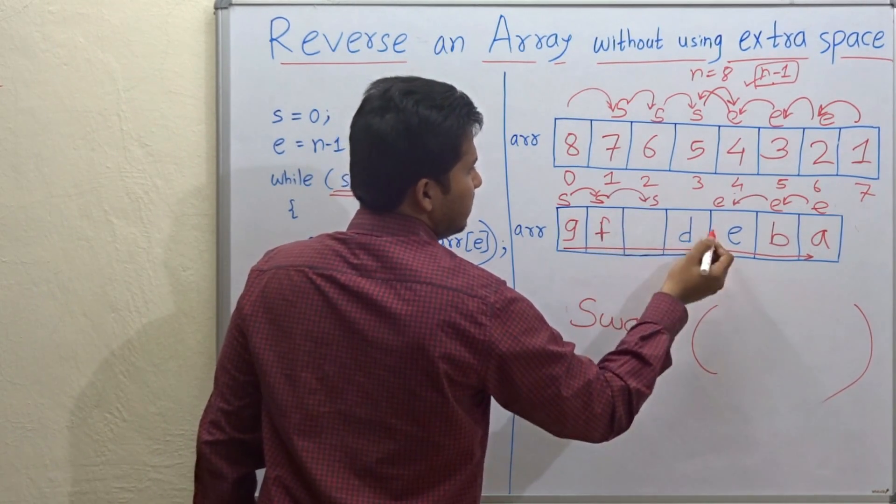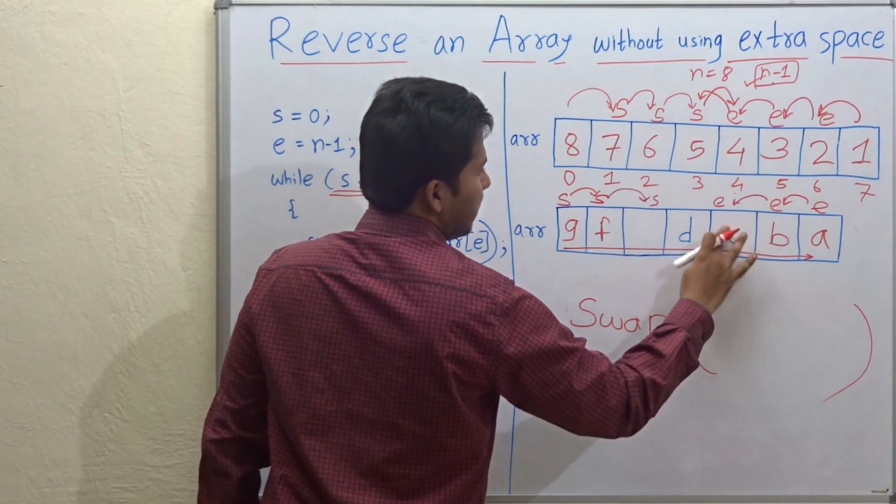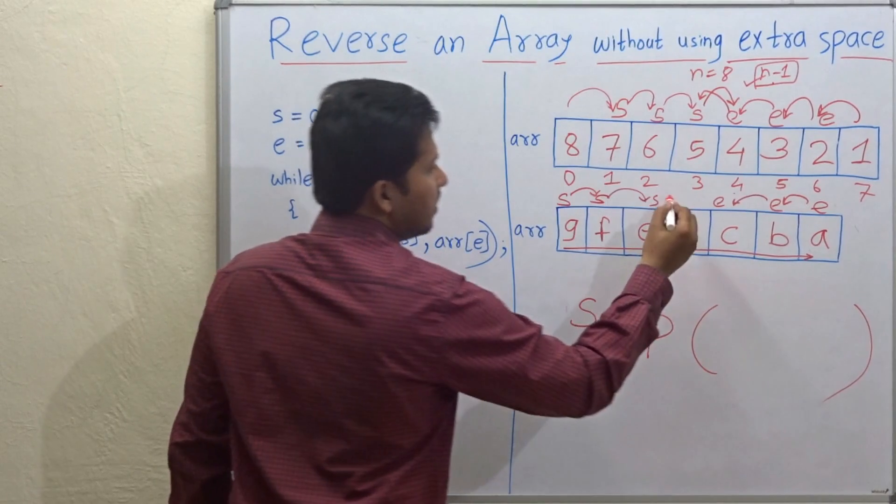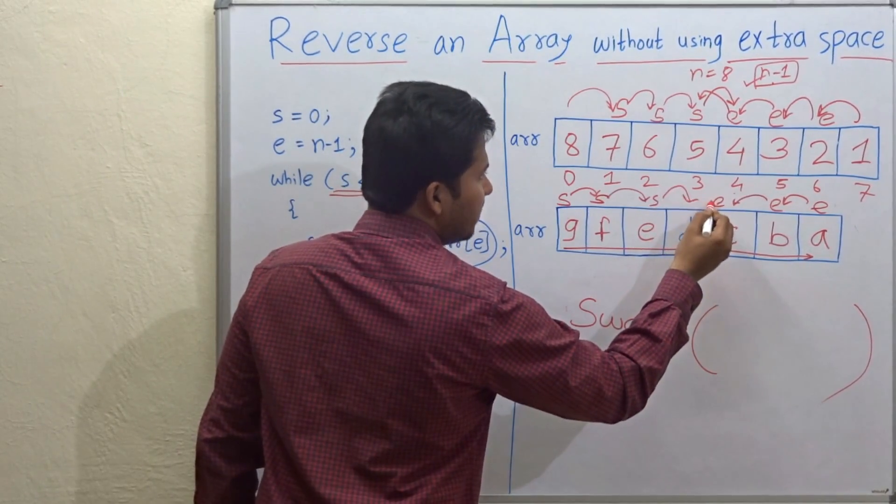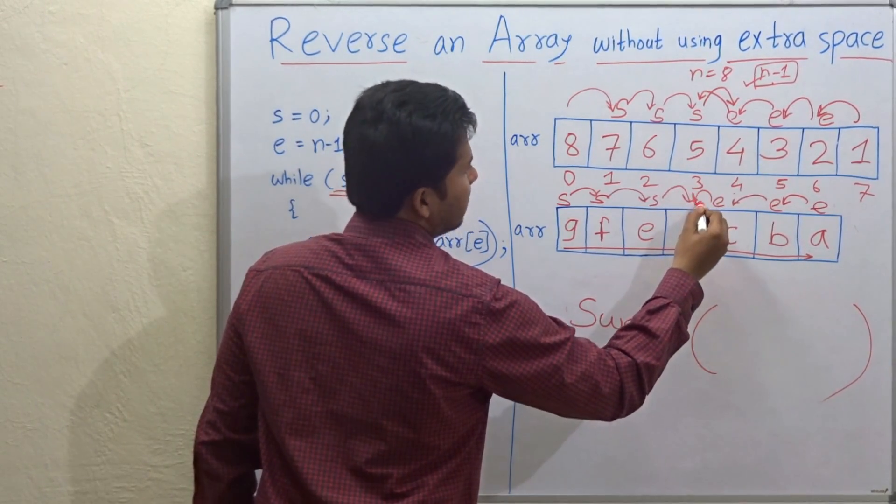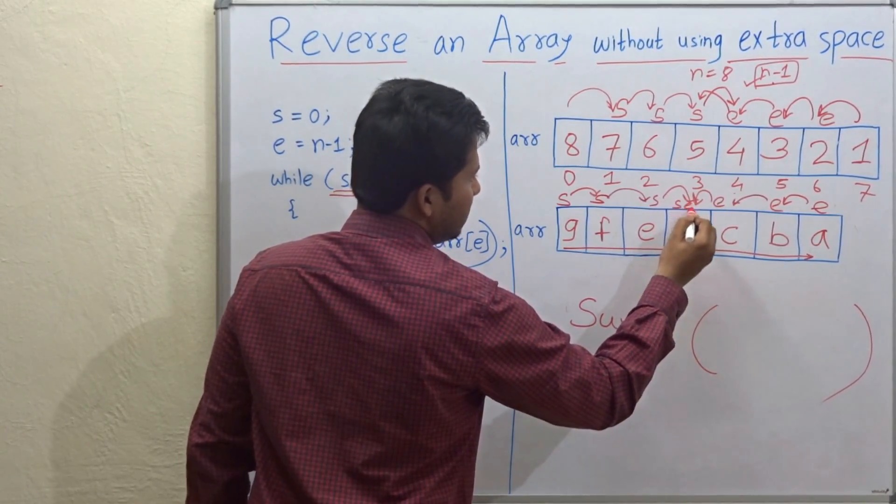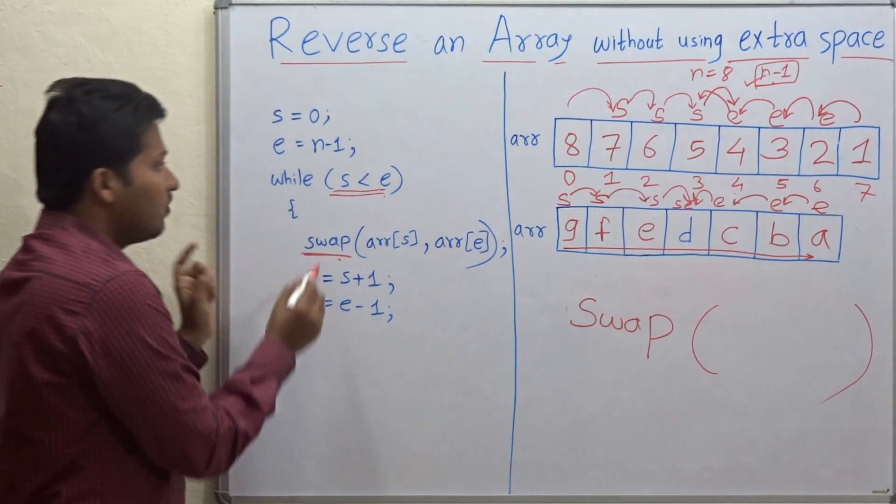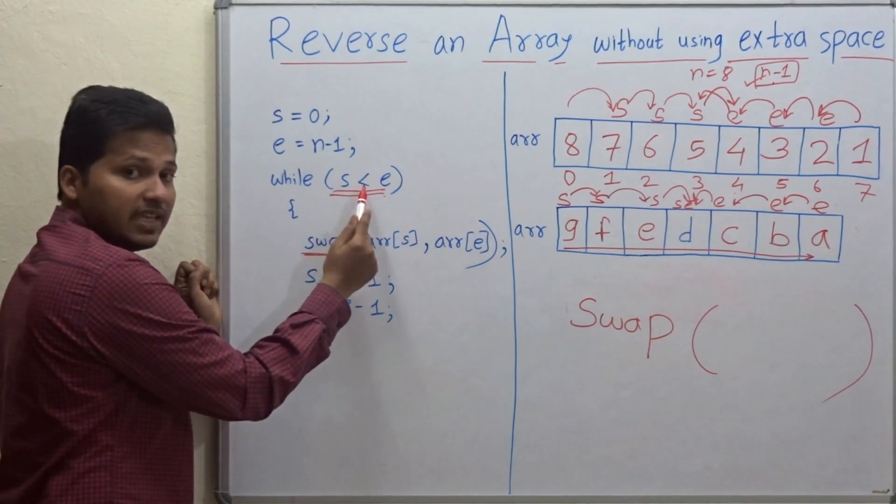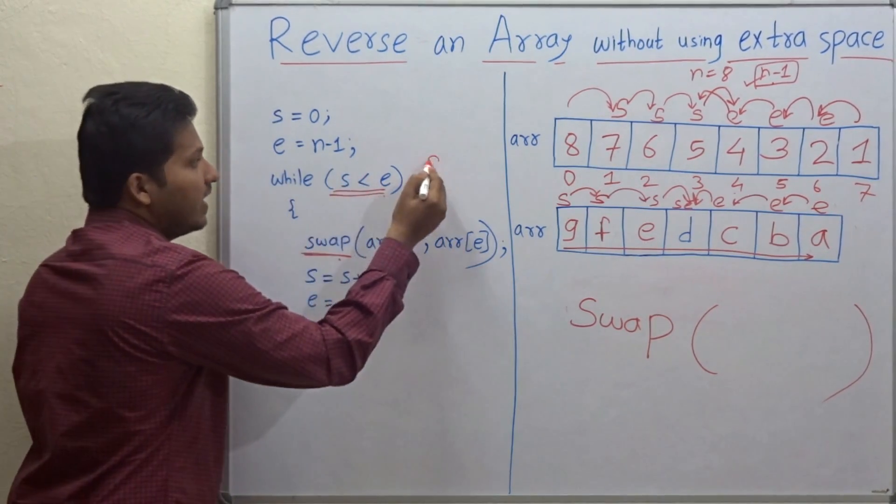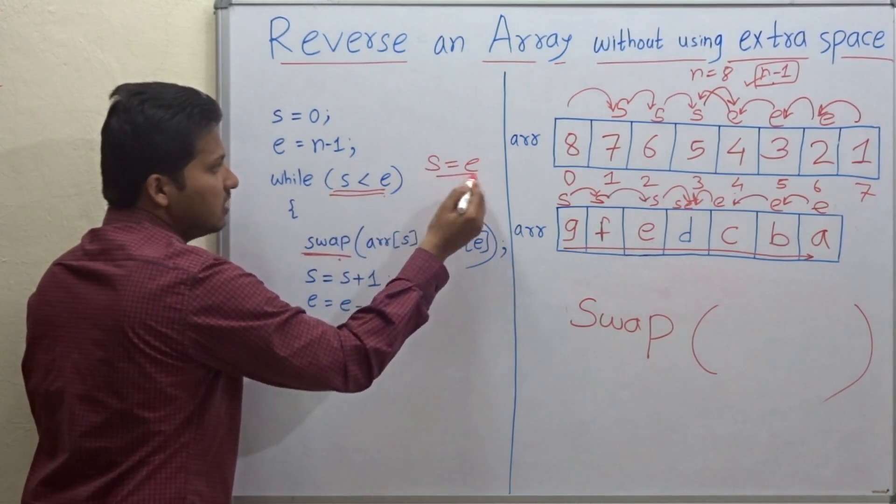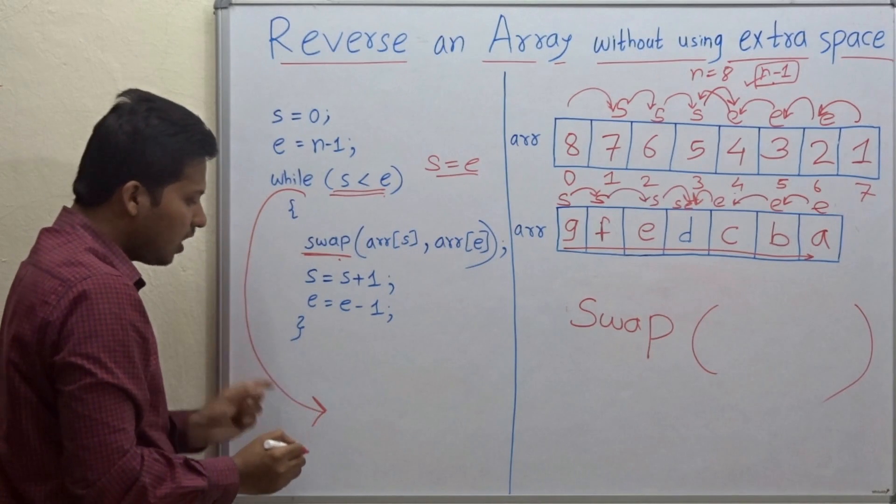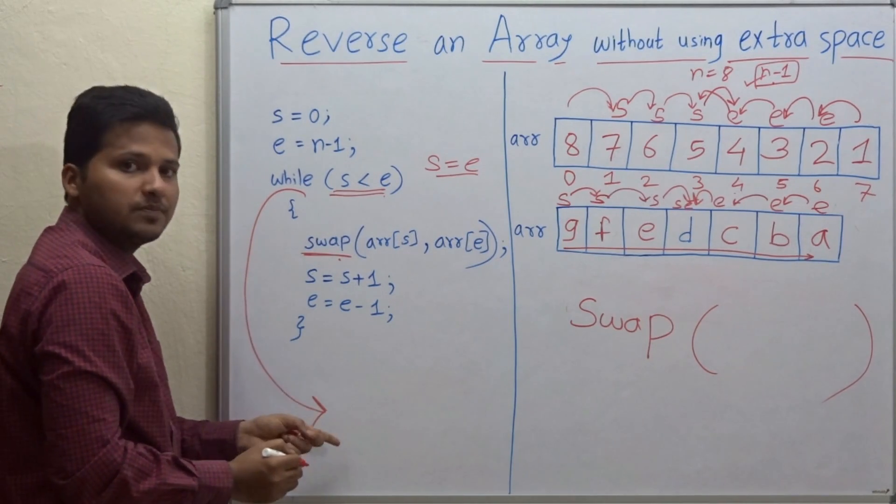Now C will come here and E will come here. Now S will be incremented and E will be decremented. So S and E both point to the same position and our breaking condition is S is less than E. But now S became equal to E. So we will break from this while loop and we will come out of the loop.